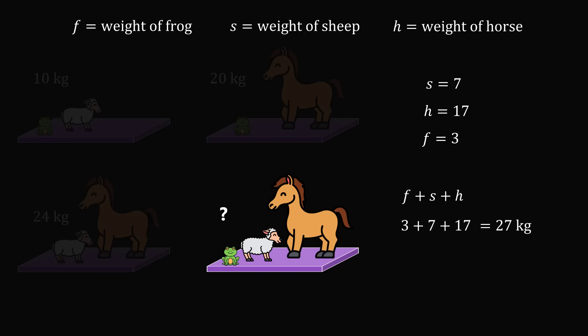This approach is certainly a valid technique to solve the puzzle. But as it turns out, there is a much more clever way to solve this puzzle. Notice in the end, we need to solve for the combined weight of one frog, one sheep, and one horse. So let's see if there's another way we can approach this puzzle.